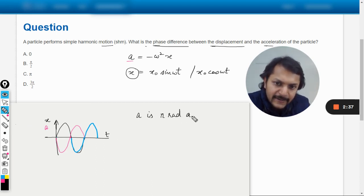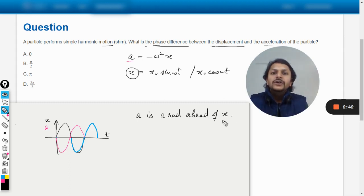So you can say that the acceleration is pi radians ahead of displacement. So whatever is the displacement, the acceleration is pi degrees away at the same point, and hence the phase difference will be taken as pi. There is no other method to understand it like that is the only method.